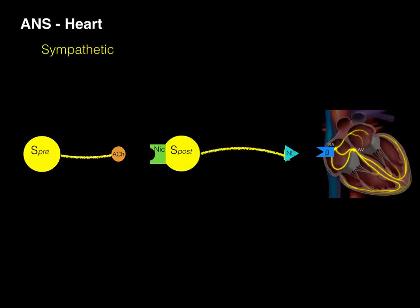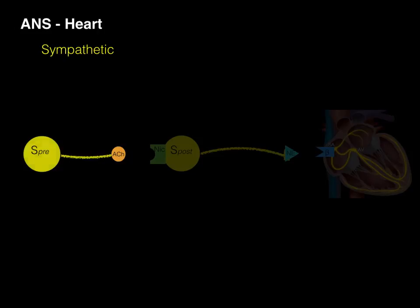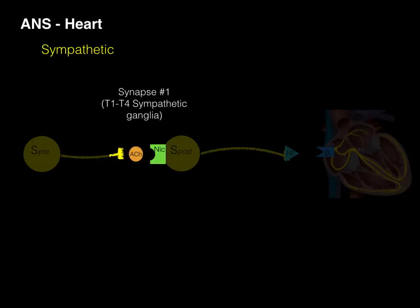Here we've got the pre- and post-ganglionic sympathetic neurons going to the heart. We're going to focus on this first S-PRE, which stands for sympathetic pre-ganglionic. An impulse conducts along that axon, and when it hits that terminal axon, it's going to release acetylcholine into synapse number one. Synapse number one occurs at the T1 to T4 sympathetic ganglia within the sympathetic chain, where the synapse between a pre-ganglionic and a post-ganglionic neuron occurs. It's a nicotinic receptor on that post-ganglionic sympathetic neuron that binds acetylcholine. Nicotinic describes one type of a cholinergic receptor.